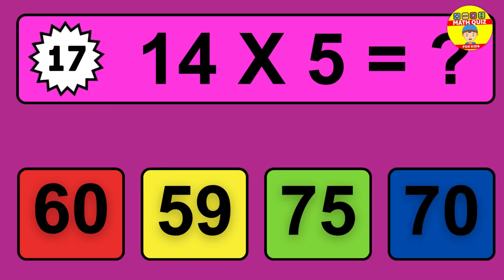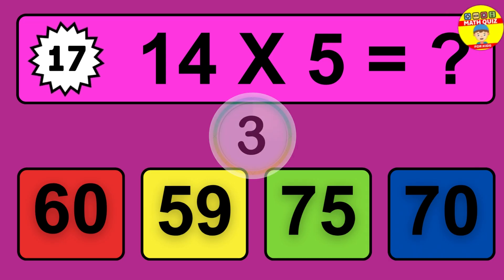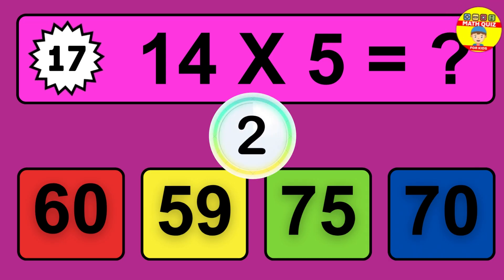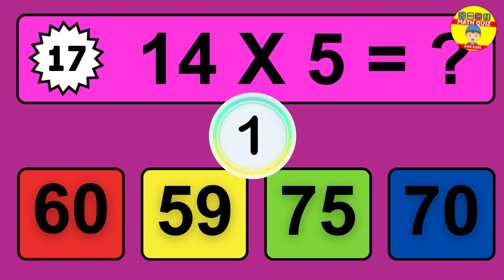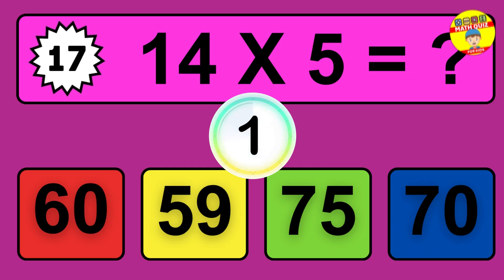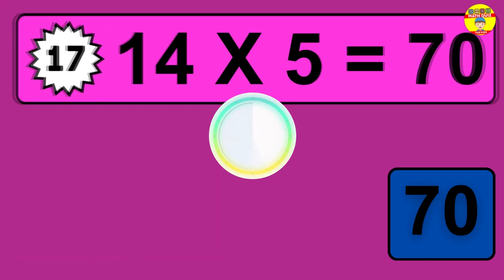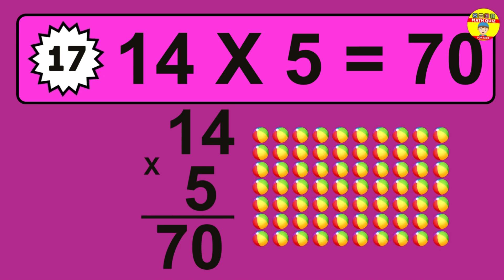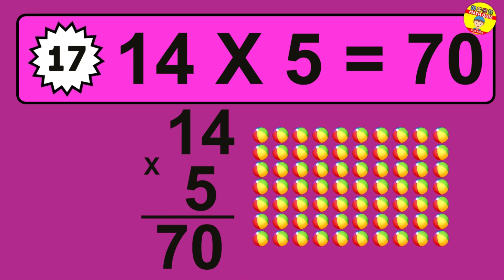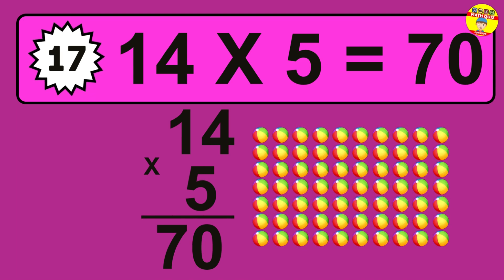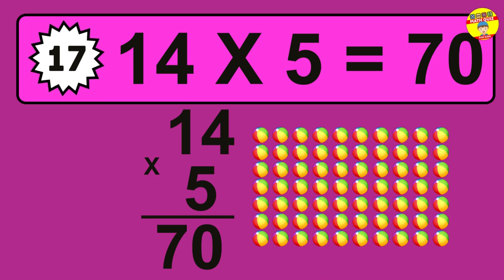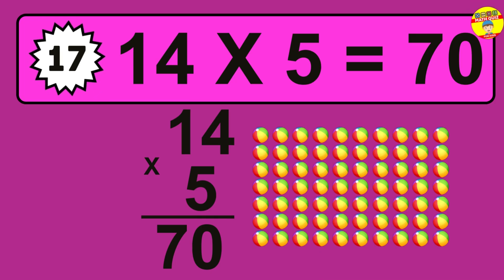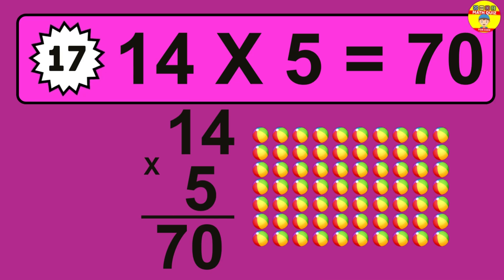Question seventeen: 14 times 5 equals what? The answer is 14 times 5 is 70. To calculate, we have 14 groups with 5 balls each. So how many balls do we have? 70 balls.